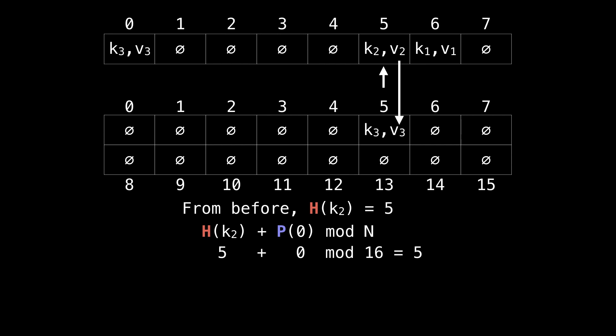We know from before that k2 also hashed to 5. So we're going to try to put it at position 5, but there's a hash collision, so we probe once. We get 5 plus 1 equals 6, so at position 6 we're going to insert k2.